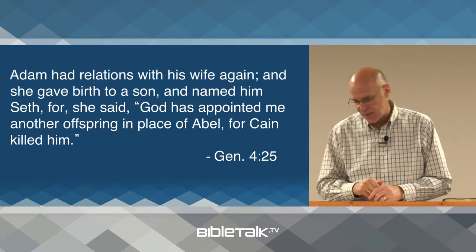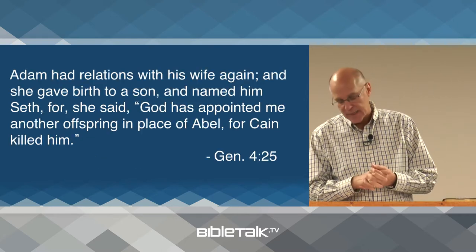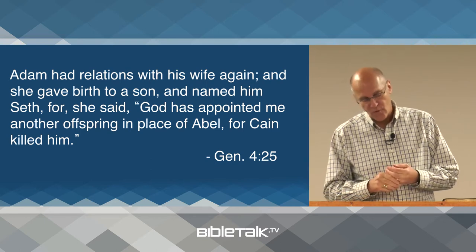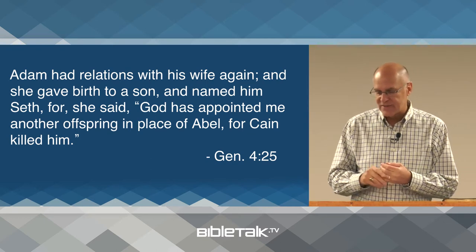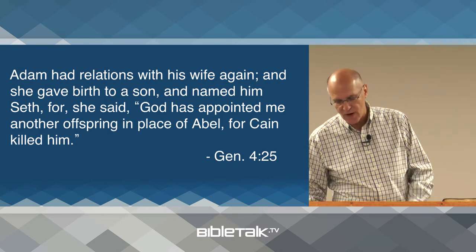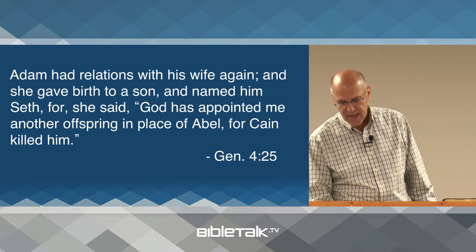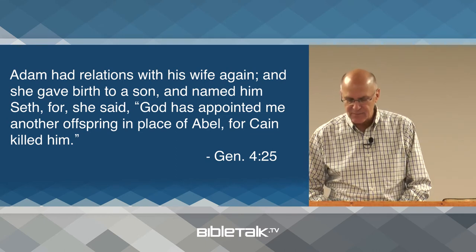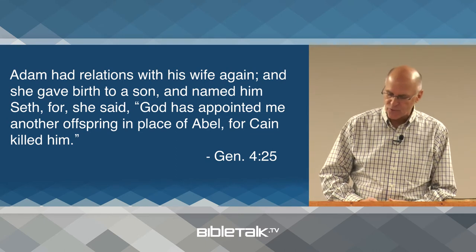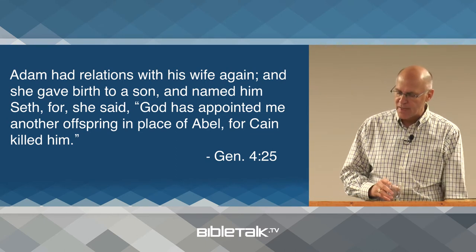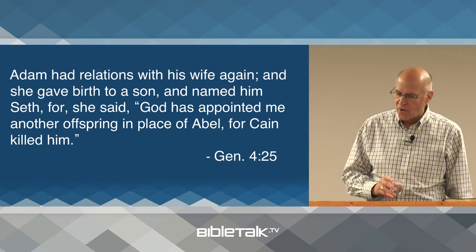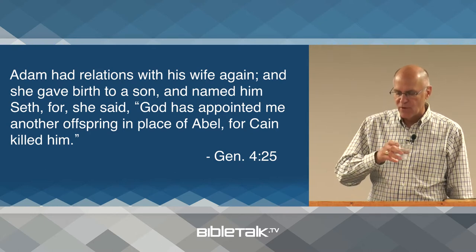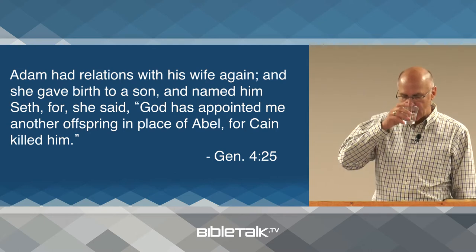Now we go to chapter 4. Chapter 4, verse 25 says: Adam had relations with his wife again, and she gave birth to a son and named him Seth, for she said, 'God has appointed me another offspring in place of Abel, for Cain killed him.'